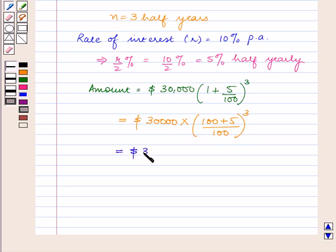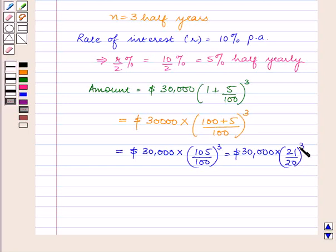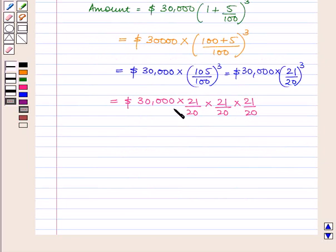This can be written as $30,000 × (105/100)^3 = $30,000 × (21/20)^3 = $30,000 × 21/20 × 21/20 × 21/20. Now, canceling the zeros first: 2 × 15 = 30.